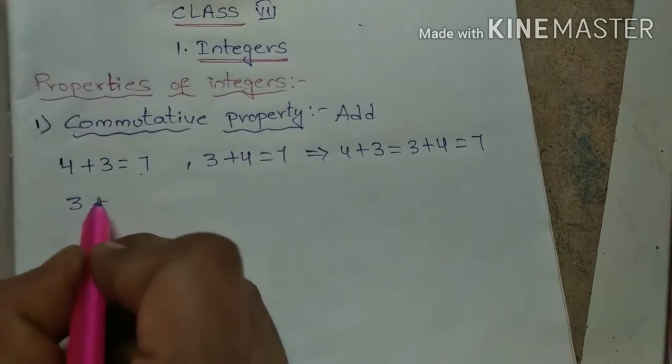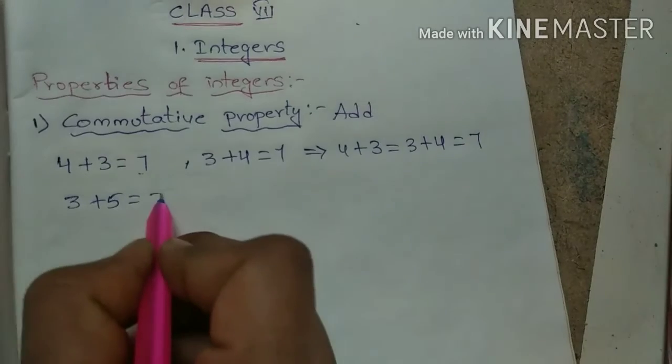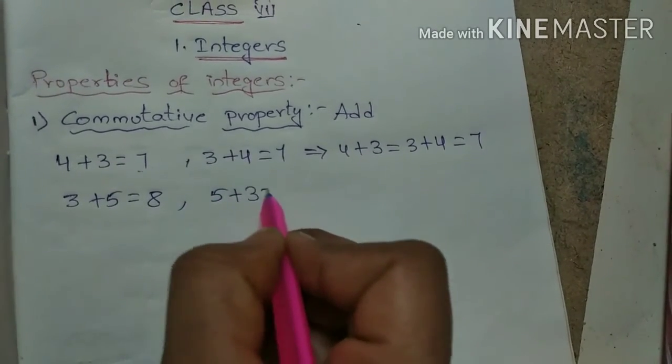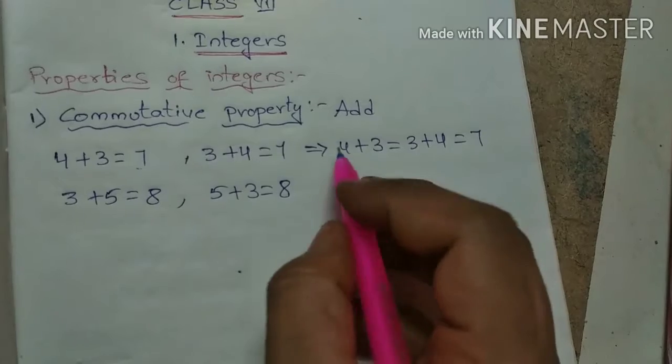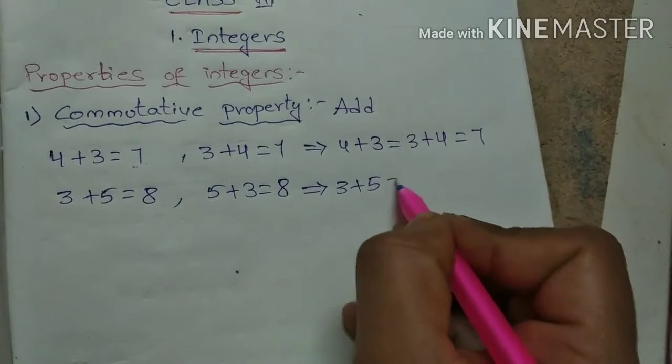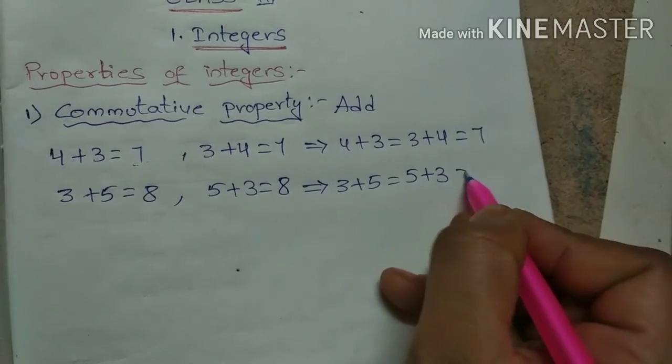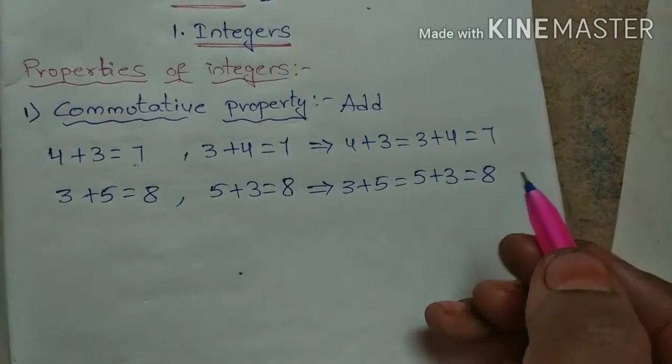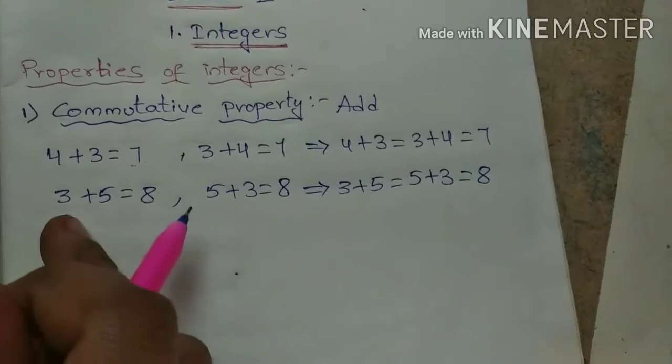8, and 5 + 3 equals how much? 8 only. So 3 + 5 equals 5 + 3. What is the result here? 8. If you add as many pairs of whole numbers as you wish...